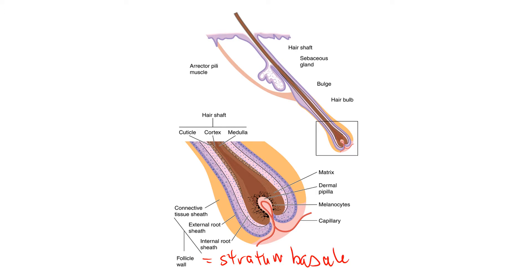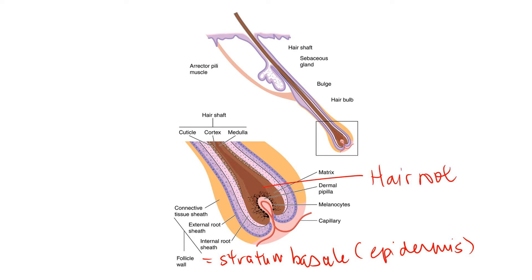Is stratum basale part of the epidermis or the dermis? Stratum basale is actually part of the epidermis — it's the bottom-most layer. The stratum basale is the follicle, and it gives rise to the hair root. The follicle provides growth of new cells for the hair root. If the follicle is damaged — which would be stratum basale — hair growth would stop.